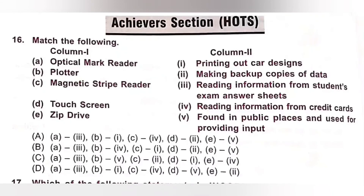Question 16 (Achiever Section — Higher Order Thinking): Match the following. A. Optical mark reader — used for reading information from student exam answer sheets: A-3. B. Plotter — used for printing out car designs: B-1. C. Magnetic stripe reader — reading information from credit card: C-4. D. Touchscreen — found in public places, used for providing input: D-5. E. Zip drive — making backup copies of data: E-2. So the correct matching is A-3, B-1, C-4, D-5, E-2. Option D is the correct answer.